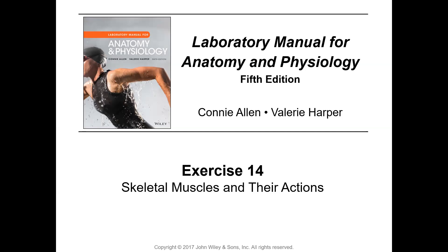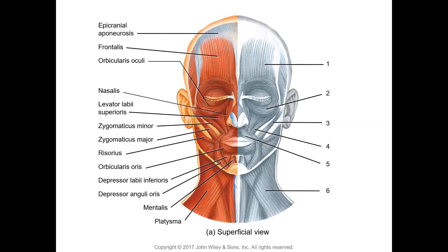Once you understand these terms you'll be able to understand the function of muscles. Muscles are named based on their location, the direction of their fibers, the structure where they're attached, or the function they perform. In lab activity one on page 200-201, go through table 14.1 and get an idea of how a muscle is named — based on direction, size, shape, principal action, number of heads, or number of tendons of origin.